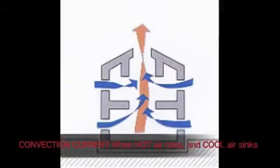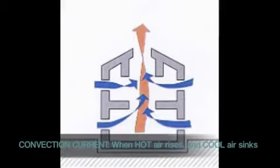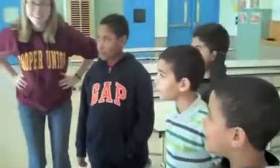A convection current is when hot air rises and cool air sinks. So let's find out why. Here's Jess to help us out. Molecules like to move around, especially air molecules. And as things get hotter, they move around a lot more. On this side I have hot molecules — hot molecules like to move around.